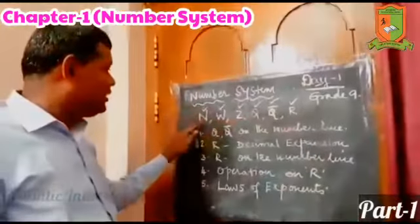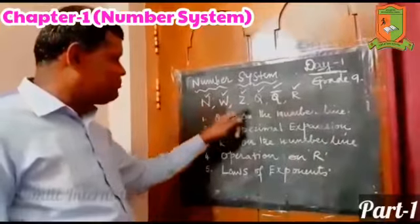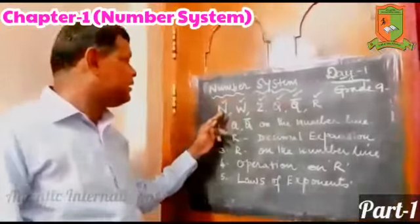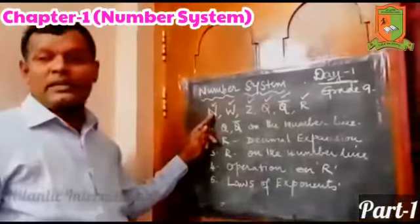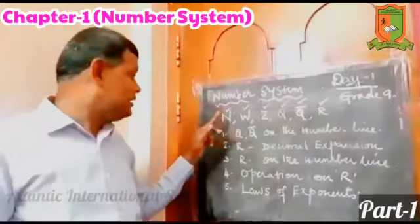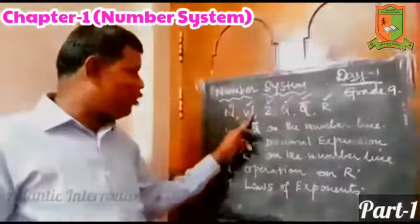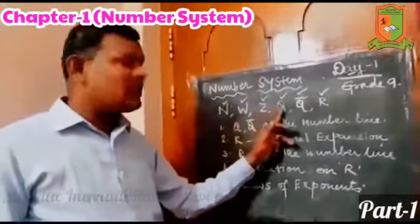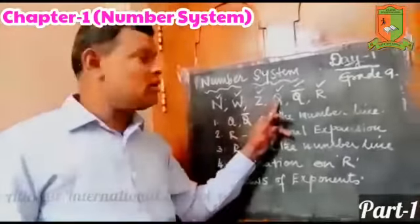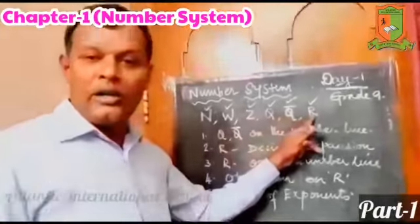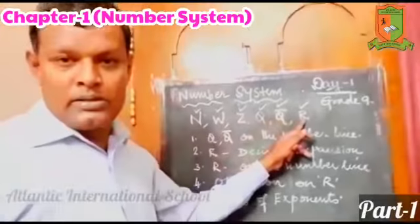I have symbolically written all these represented letters: natural number, whole number, integers, rational, irrational, and the real numbers.